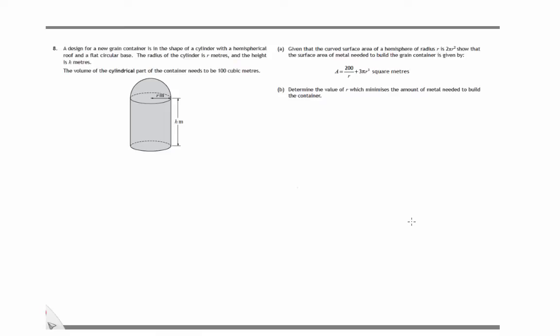This is the solution to Question 8, Paper 2 of the SQA's Curriculum for Excellence Specimen Higher Exam. We're given this grain container in the shape of a cylinder with a hemispherical roof on it. There's a flat circular base and various pieces of information. The radius is R, height is H, volume is 100, and we're told the formula of the curved surface area of a hemisphere. We're asked to show that the surface area of metal needed to build this container is given by this formula here.